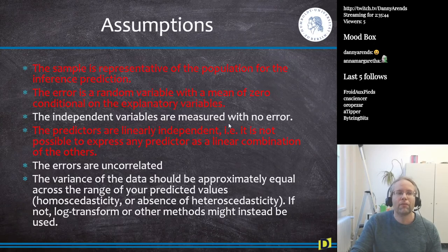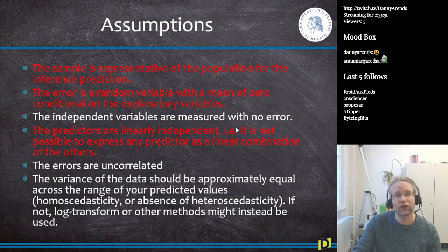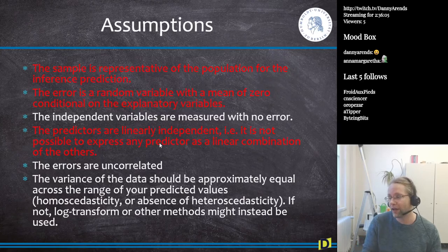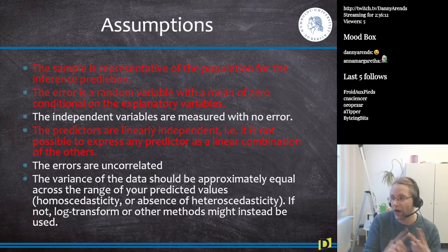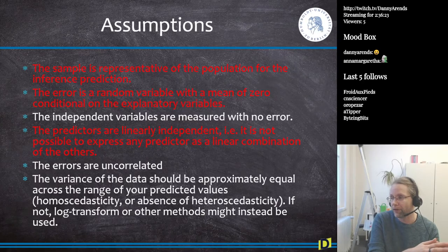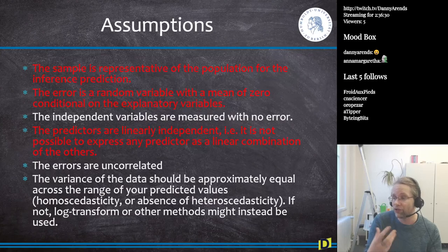The next assumption is that the independent variables are measured with no error — which is impossible. You cannot measure the food intake of a mouse without any error, so this assumption is generally considered unfulfillable. Another assumption is that the predictors are linearly independent: food intake and exercise should not show any correlation, otherwise you cannot estimate their effects independently.